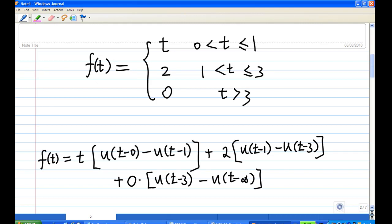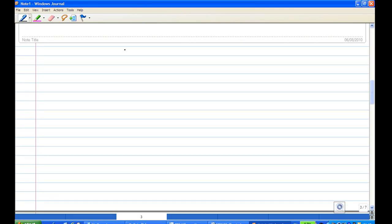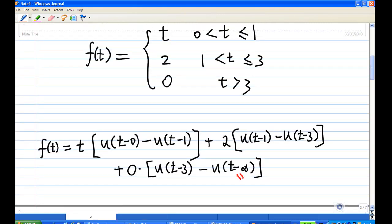Now, what is actually u(t-infinity)? If we recall that u(t-c) looks like this, you have a point c here. u(t-c) will be 0 all the way to c then 1. Alright, this is u(t-c). So in particular, if you want to find u(t-infinity), this is actually when you push c all the way to infinity. Therefore, this is equal to 0.